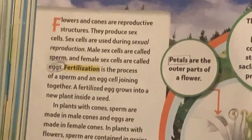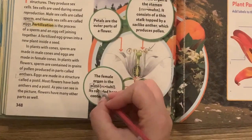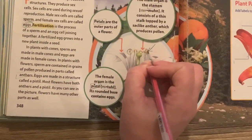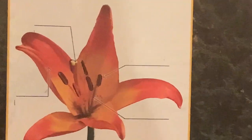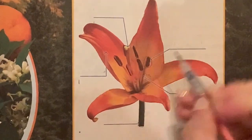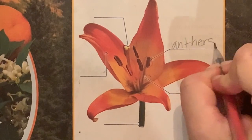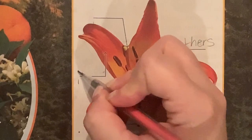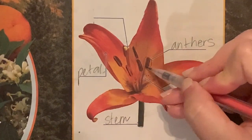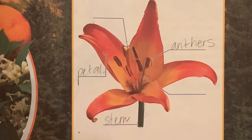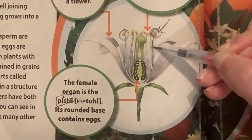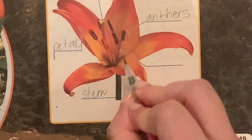Let's take a look at this picture of the flower — like a hibiscus, you could possibly label one at home. I'm going to label the pistil, the petals, the stamen, and the anthers. The anthers are those little sac-like parts right here. This here is the petal. This is pointing to the stem, and this thin stalk is called the stamen.